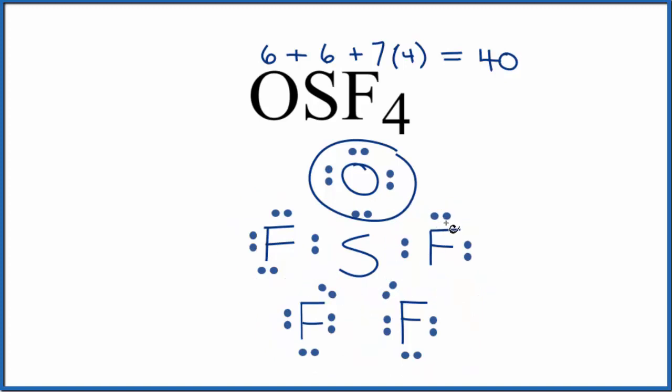So this looks like a pretty good Lewis structure. The problem is, if we look at the formal charges, the oxygen would be minus 1, and the sulfur here is positive 1. And we'd like our formal charges to be as close to 0 as possible.